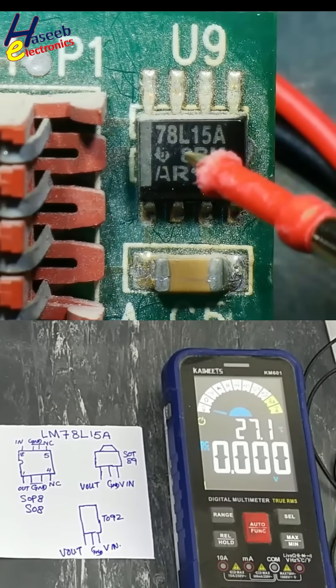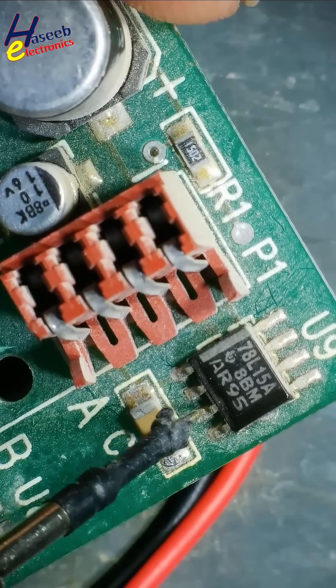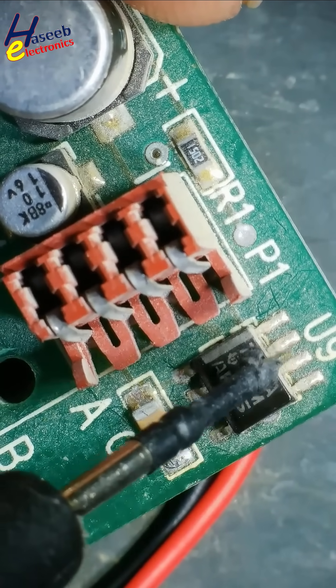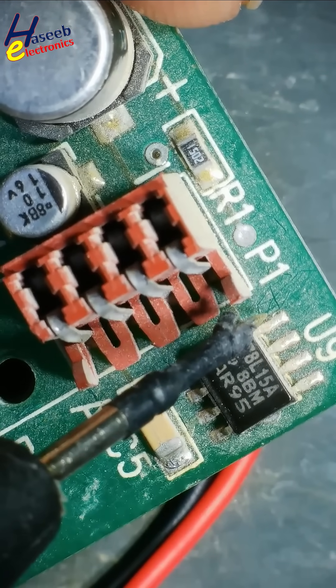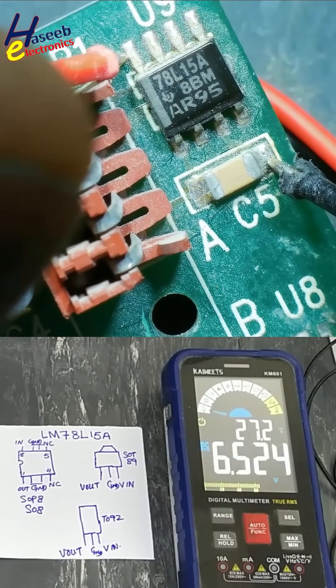15V output. Basically, it is a 3-pin regulator: pin 1 output, ground, ground, pin 4 not connected, pin 5 not connected, pins 6-7 ground, pin number 8 input voltage. This is output and this is input.